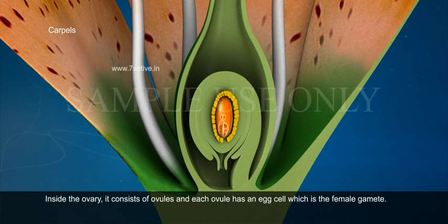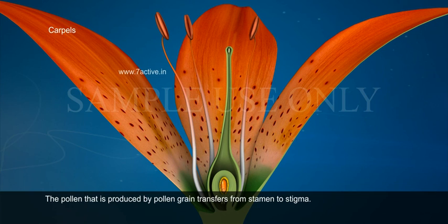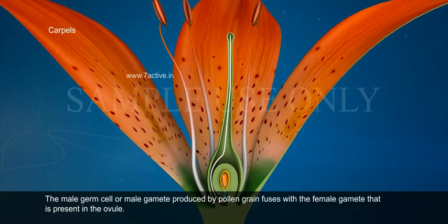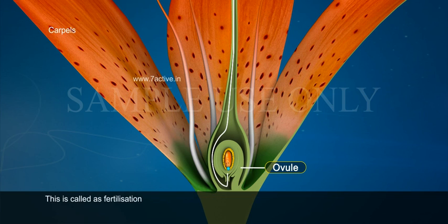Inside the ovary it consists of ovules, and each ovule has an egg cell which is a female gamete. The pollen produced by the pollen grain transfers from the stamen to the stigma. It moves through the style and reaches the ovary. The male germ cell or male gamete produced by the pollen grain fuses with the female gamete that is present in the ovule. This is called fertilization.